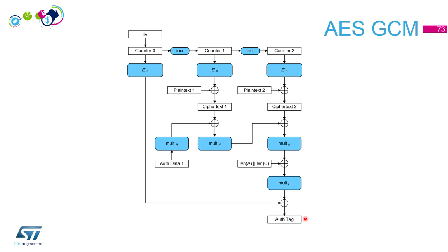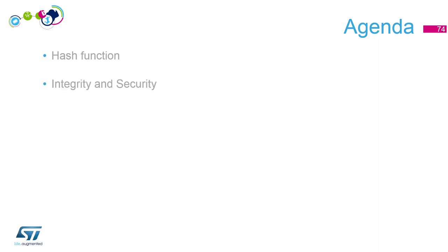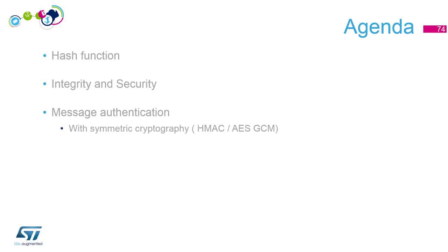Let's check our agenda recap: hash function — huge input data, fixed-size digest with ideal properties. One modification of the input modifies the digest; from the digest you can't find any information about the input; two different inputs should generate two different digests. A hash function alone is not very useful for security, so we define message authentication — a combination of hash with symmetric encryption — and we've seen HMAC and AES-GCM algorithms.